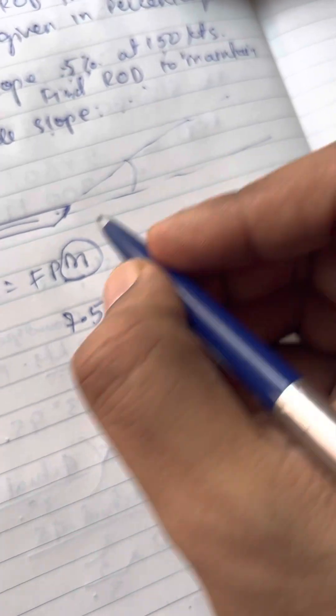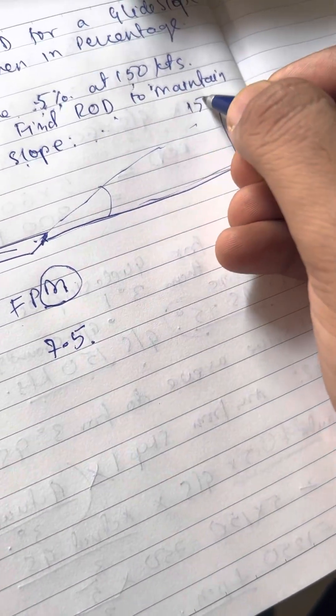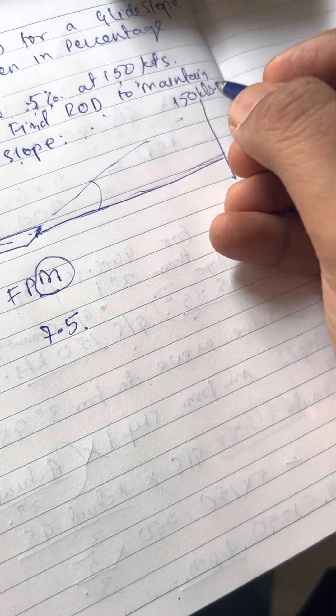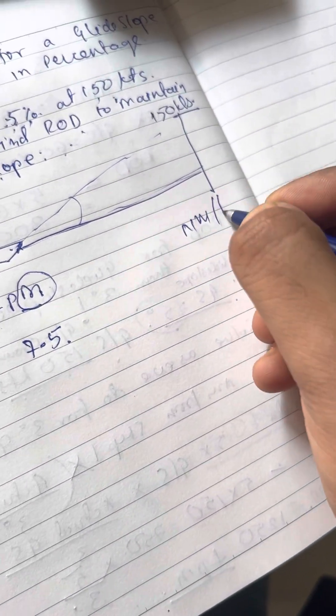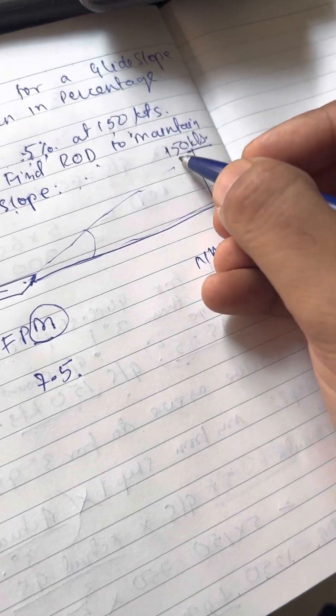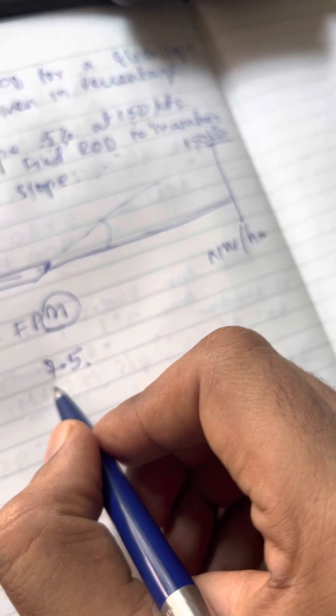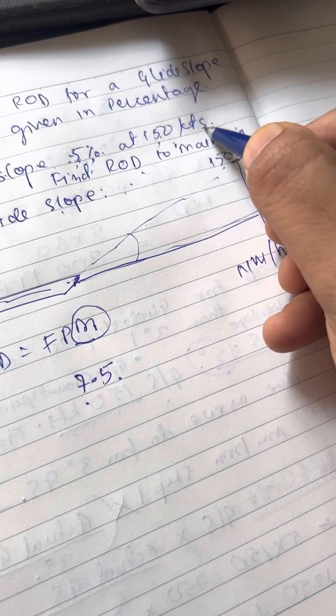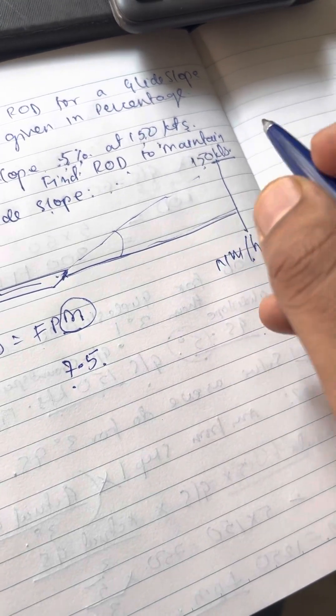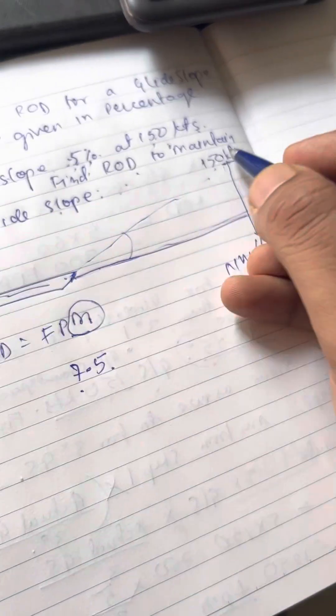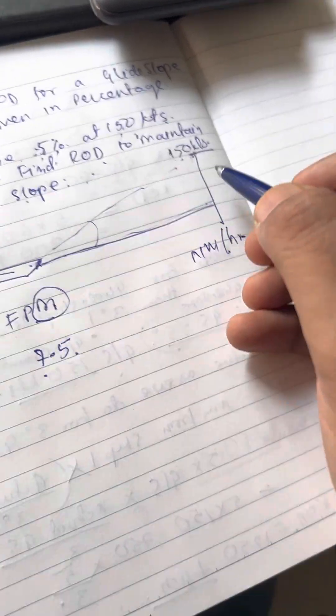This means that basically if you are traveling at 150 knots, then knots means nautical miles per hour. It means that 7.5, that is 5% of 150 knots. What does it mean? It means that overall in one hour, you will be crossing 150 knots. That is the meaning of your speed.